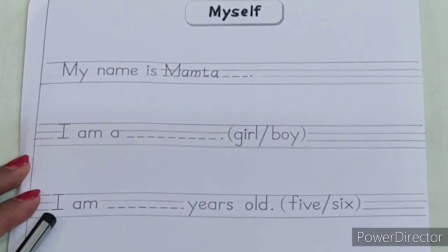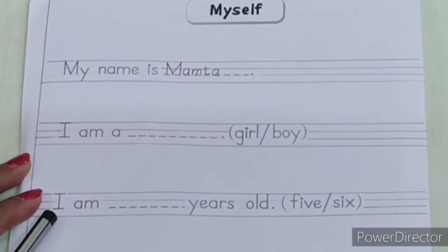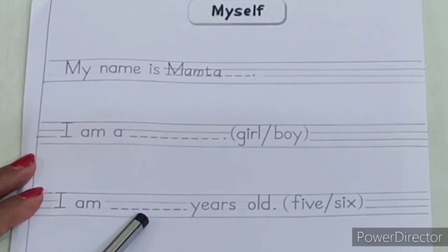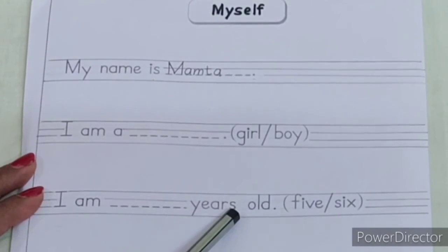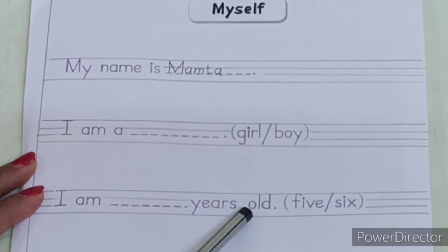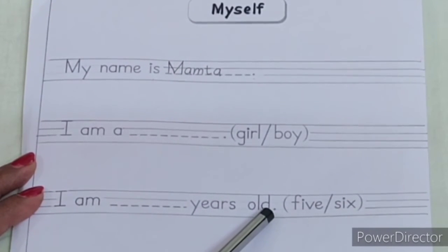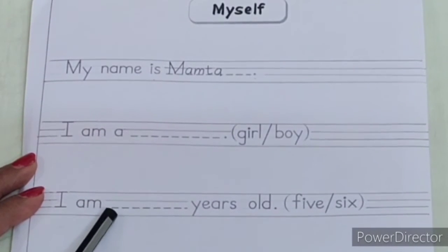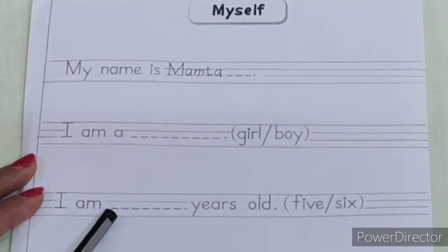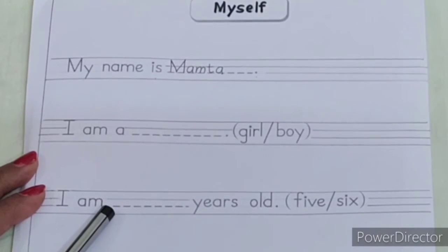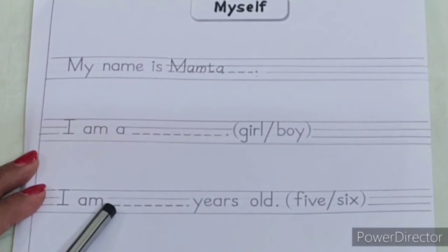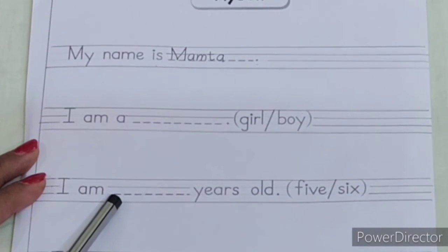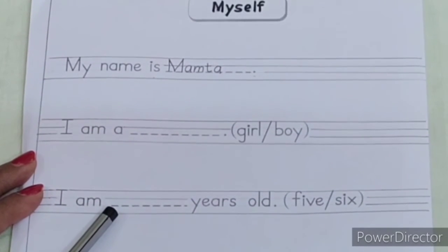Now read the next one. I am years old. Now if you are 5 years old, then you have to write F-I-V-E, five. And if you are 6 years old, then write down S-I-X, six.